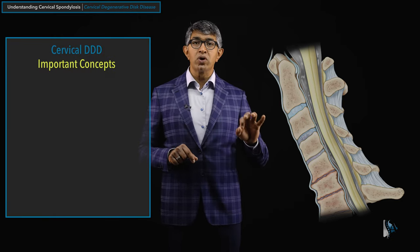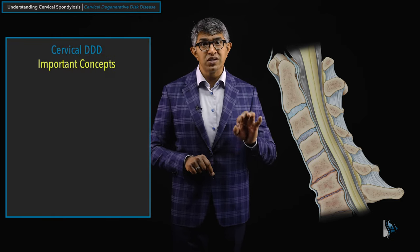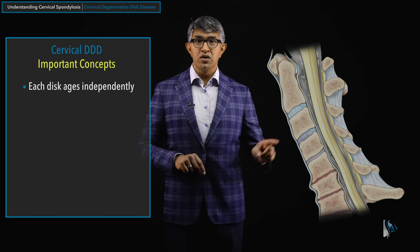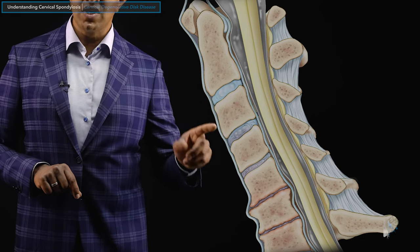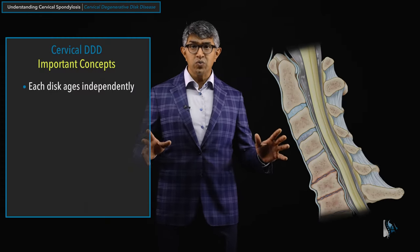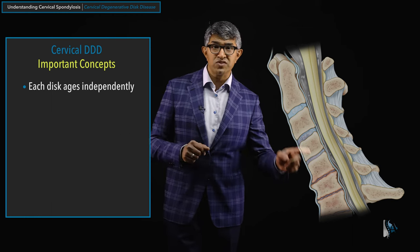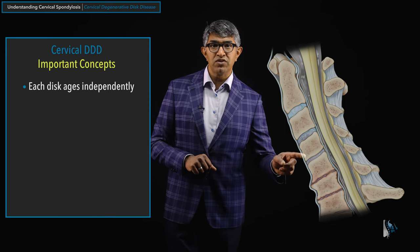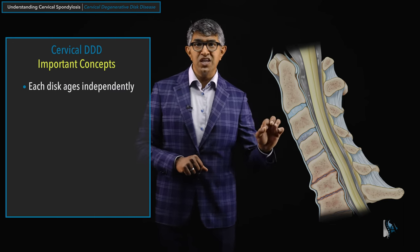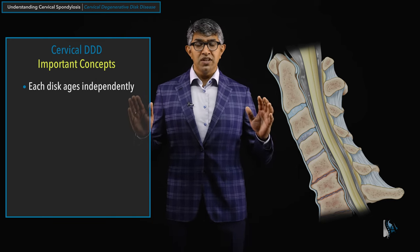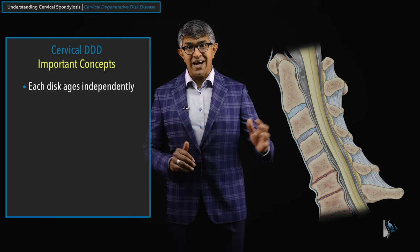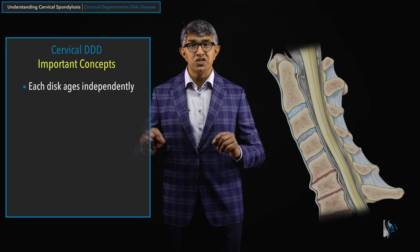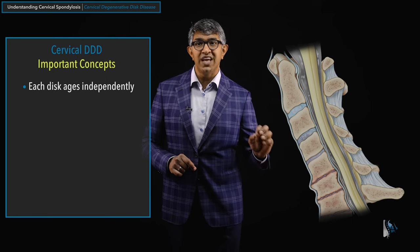There are a couple of important concepts about cervical degenerative disc disease. Number one: each disc ages independently. C2-3, for example, may look great while lower levels look worse. The discs that are lower down frequently get more wear and tear, but levels like 3-4 and 4-5 don't necessarily age symmetrically. Just like tires on a car — your right front and back left may wear differently — these discs will often age independently.